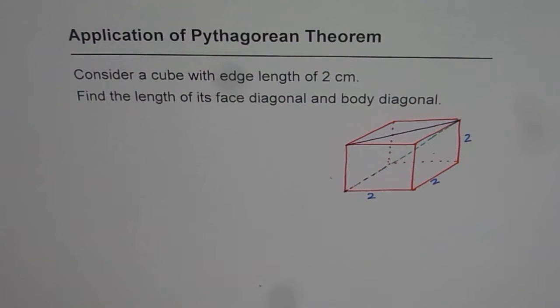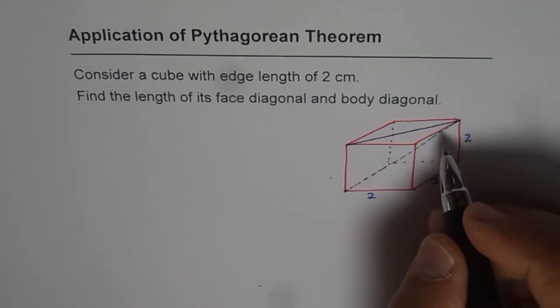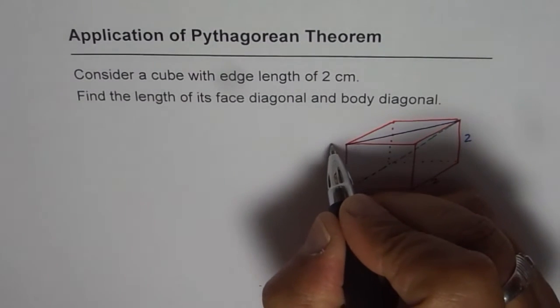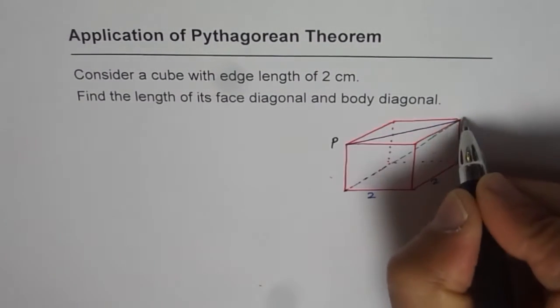And as you can see, they are kind of related. So let's do the face diagonal first. So let's say these points are P and Q.